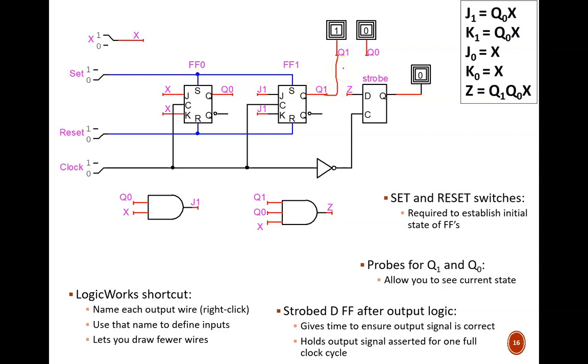There is one significant change, however. I added the strobed D flip-flop after the output logic. The state memory is still in these two JK flip-flops, like we saw in the previous slide.